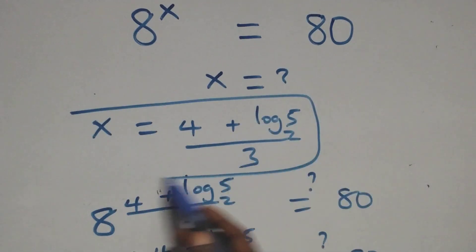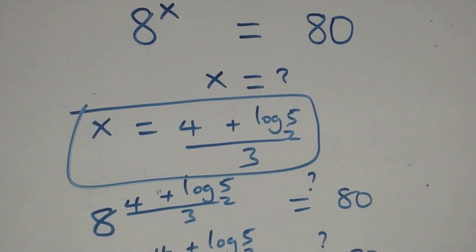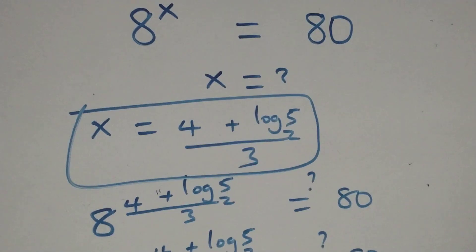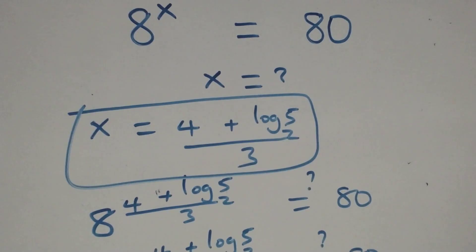Therefore, we conclude that x equals to (4 plus log₂5) over 3 satisfies the given problem. Thank you for watching — don't forget to subscribe for more videos, turn on the notification bell, share this video, and put your comments. See you next class, bye for now.